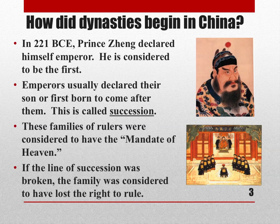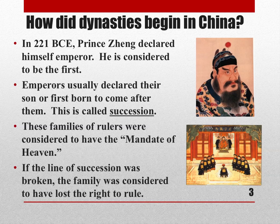If the line of succession was broken — if there were no heirs to the throne — the family was considered to have lost the right to rule and therefore lost the mandate of heaven. That period between one dynasty and another tended to be very chaotic, which we will learn about when we study the first major dynasty in China.